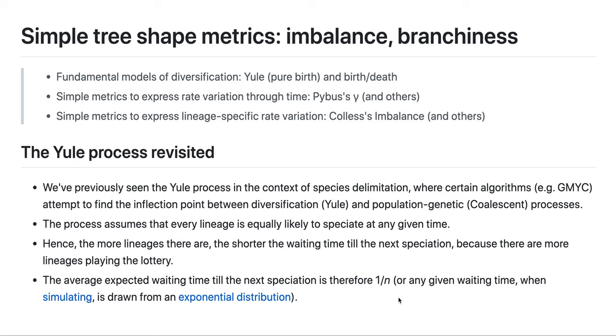And so then if such a split has happened, we are now playing the same game but with two players. So on average, the waiting time till the next speciation event has been divided in half, because now there's two players and previously there was one.